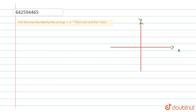Hello students, here is a question. Find the area bounded by the curve y is equal to e raised to power minus x, the x-axis and the y-axis.